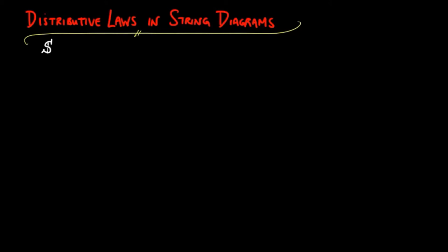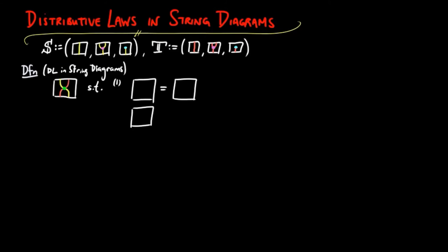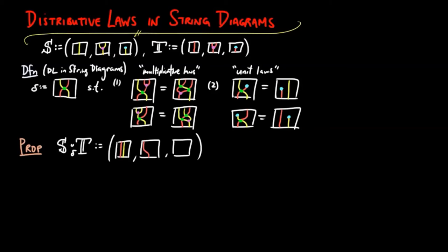So if we have monads S and T on a category E, we define a distributive law in string diagrams as a natural transformation given by the green dot from TS to ST, which satisfies the multiplicative laws and the unit laws given here in string diagrams. We prove that the composition ST via the distributive law delta with the following structure is a monad on the category E.